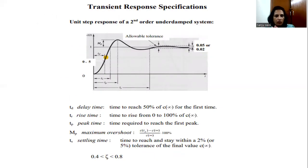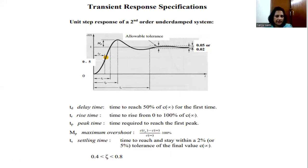What do we want to make out from these responses? We want to analyze the performance of the system, and this performance is analyzed in terms of certain specifications. This is the response of an underdamped second order system, and there are five main specifications used to evaluate its performance. The first one is the delay time — the time taken by the response to reach 50% of its final value for the first time. This is the 0.5 value point; the time taken by the system to reach 50% of its final value is termed the delay time.